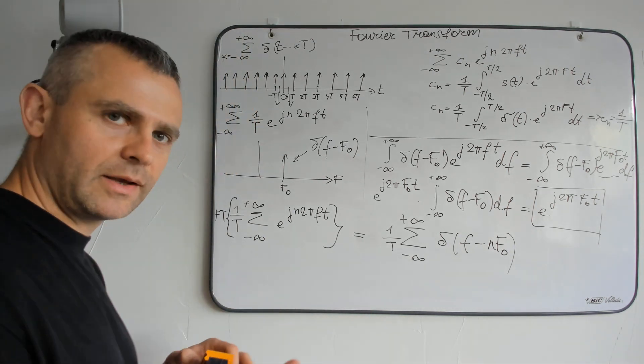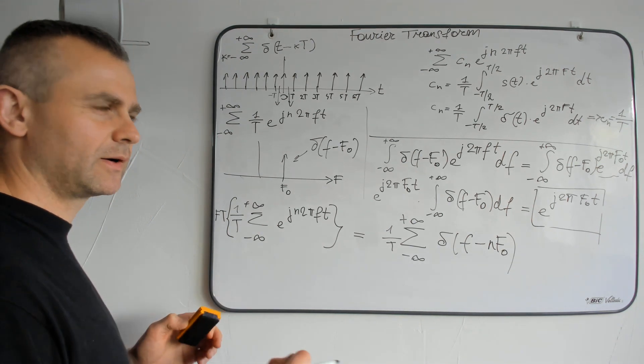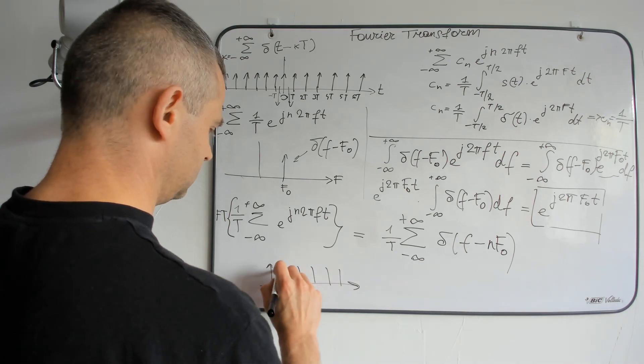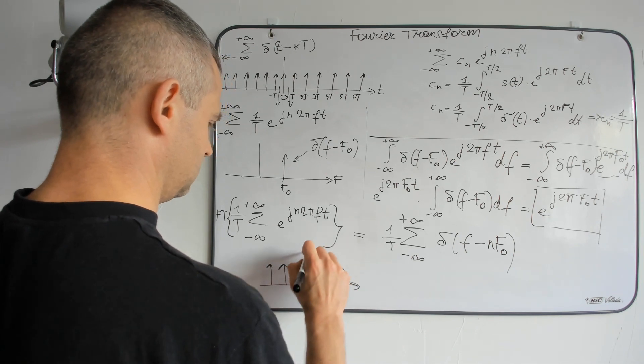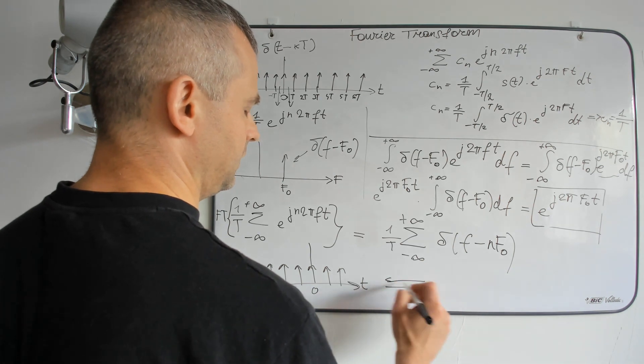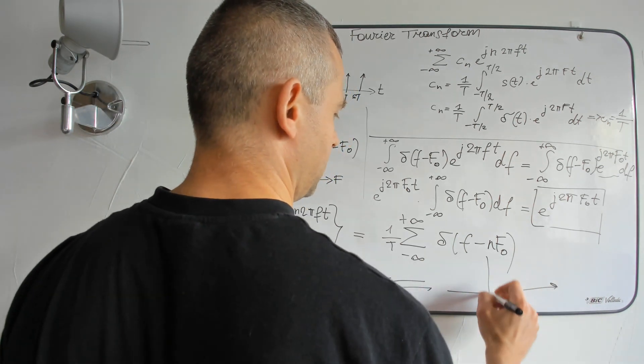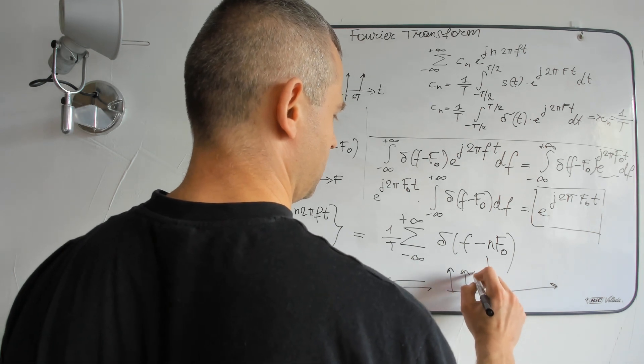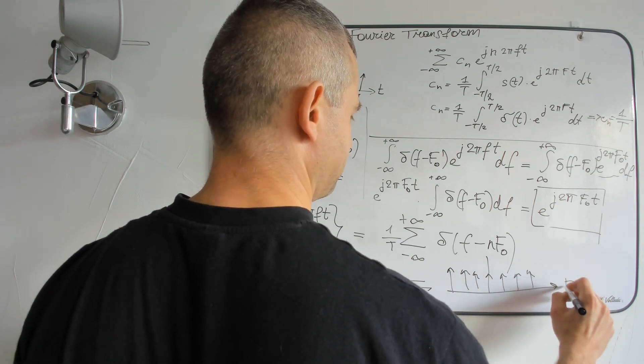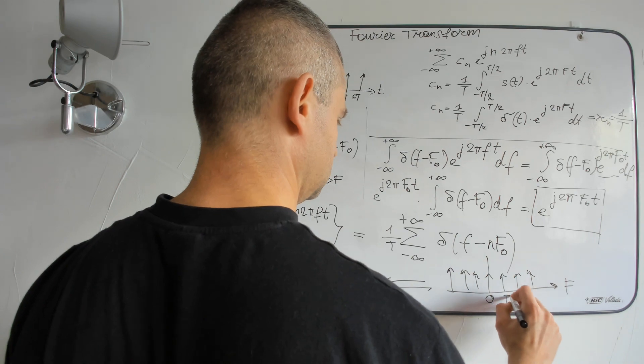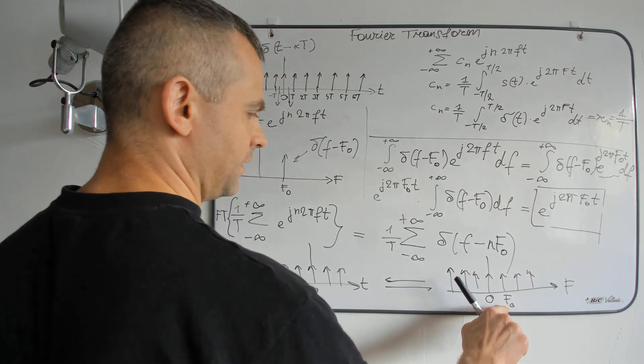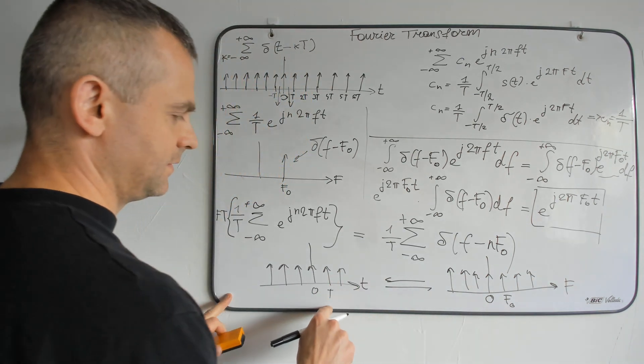So a comb of delta functions, a Dirac comb in time domain, is equivalent to a Dirac comb in frequency domain.